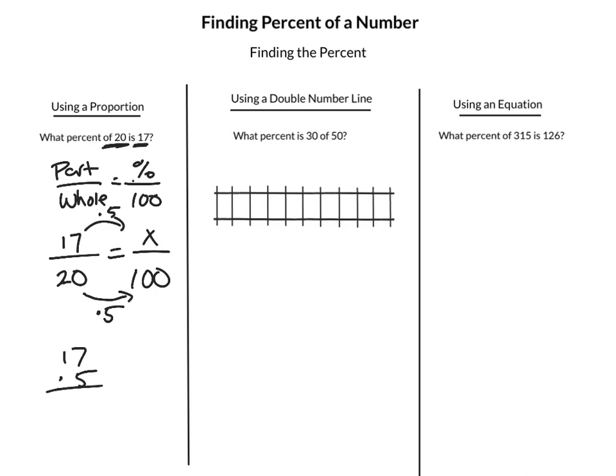So I just need to do 17 times 5. 5 times 7 is 35. 5 times 1 is 5, plus 3 is 8, so we have 85. So what percent of 20 is 17? 85 percent.